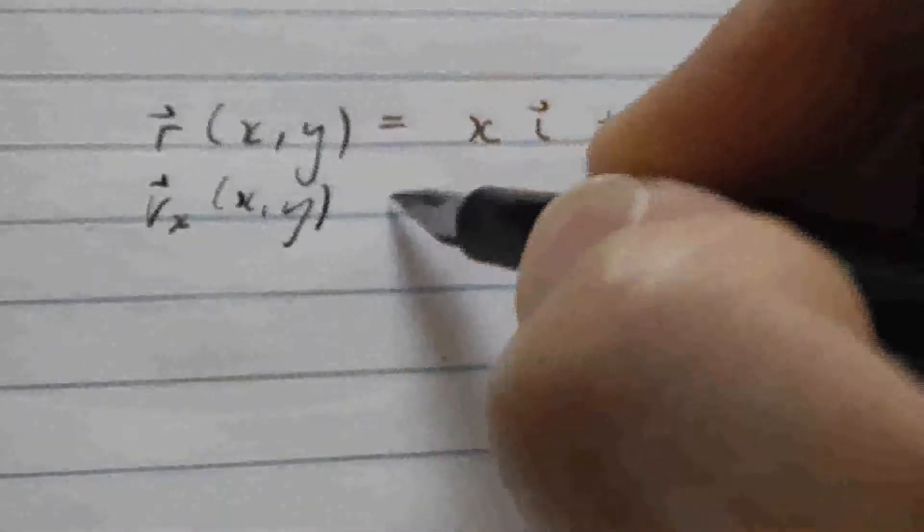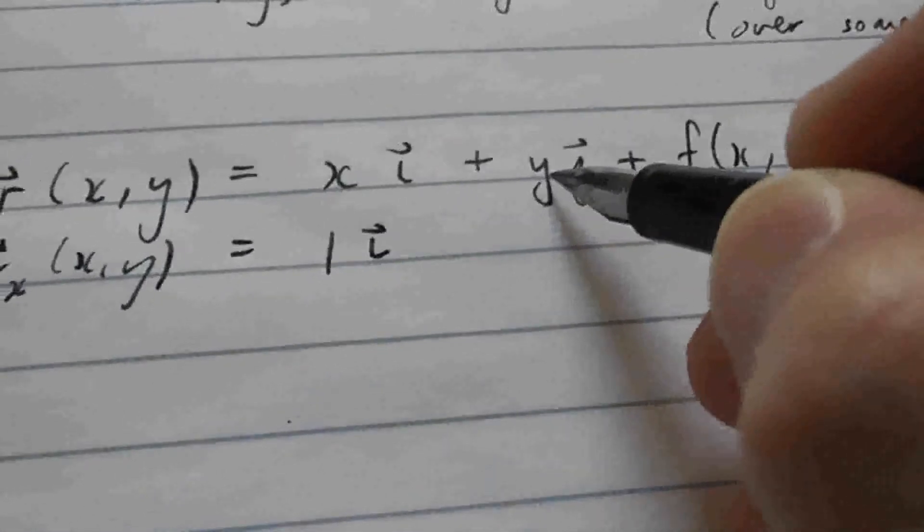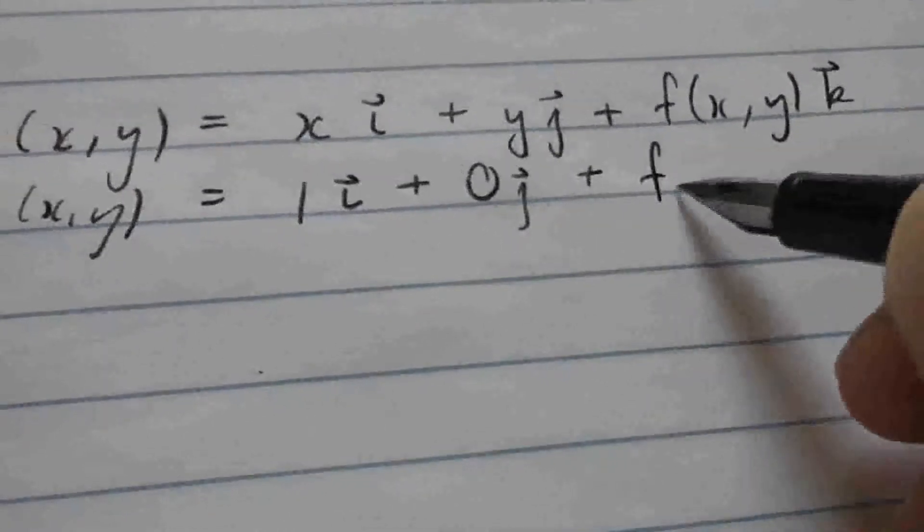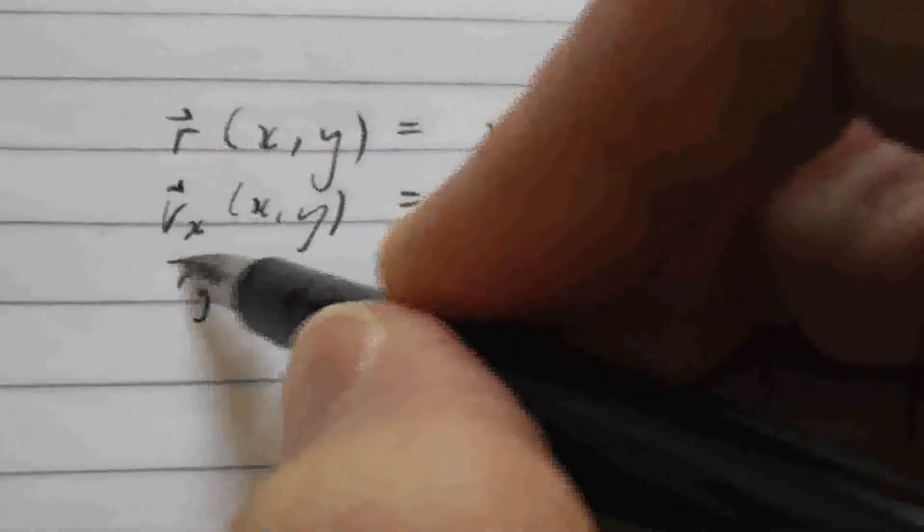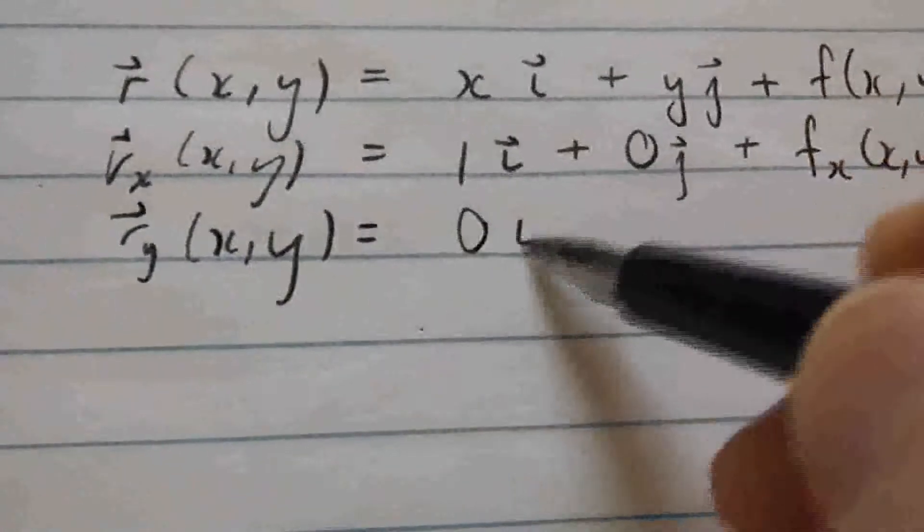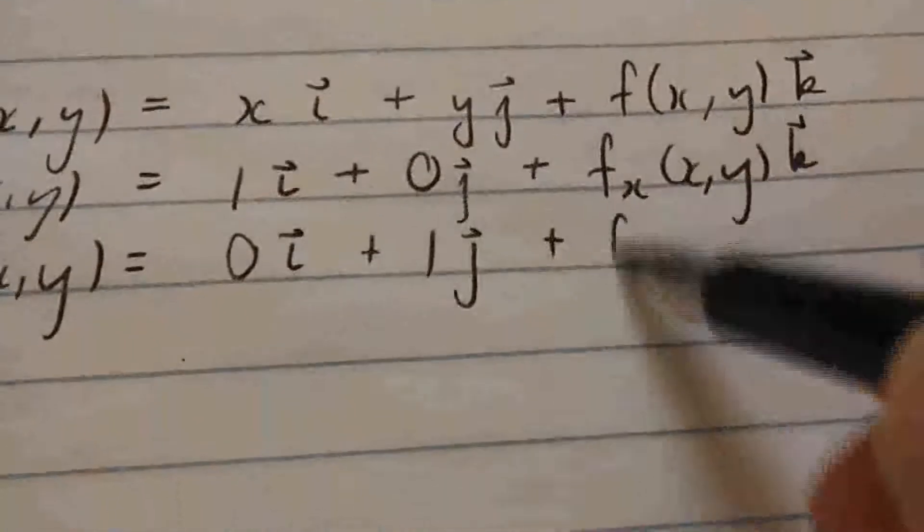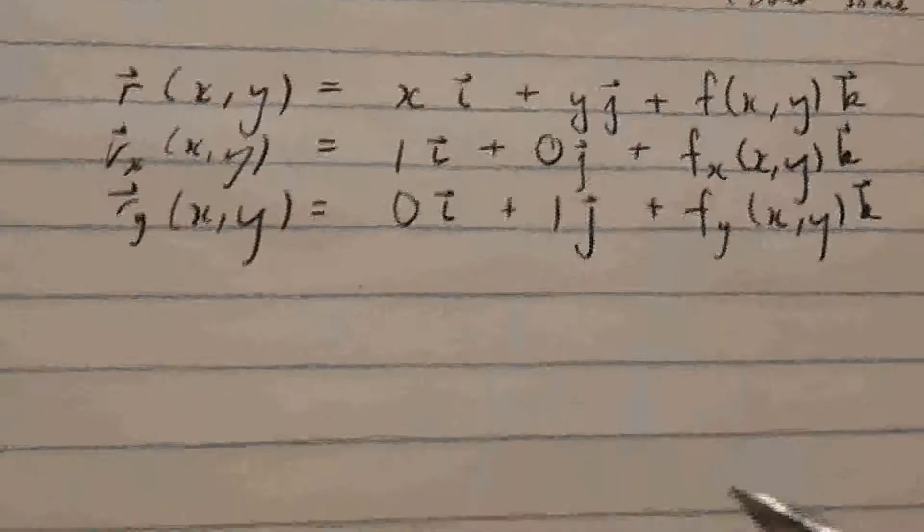And how do we do it? Well, we first take the x derivative, and we're going to work this out because things are going to simplify. See here, the x derivative of y is zero, and then the x derivative of f as a function of x and y is just f sub x of x, y. And we want to take the y derivative of this. So when we take the y derivative of x, we get zero, the y derivative of y is one, and the y derivative of f of x, y is f sub y.